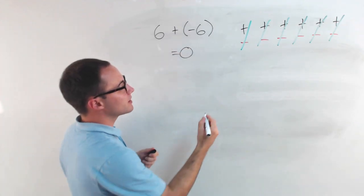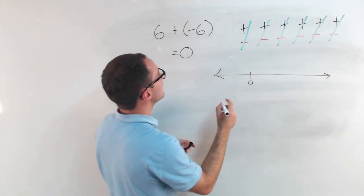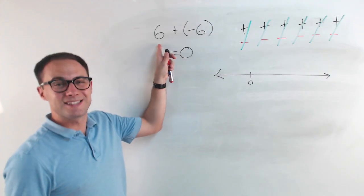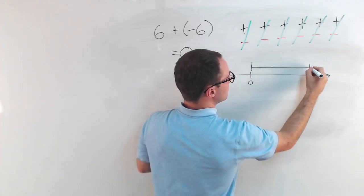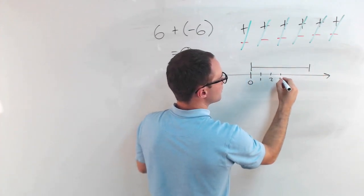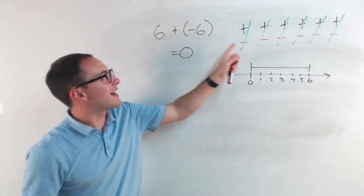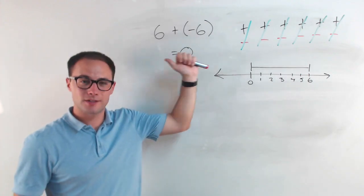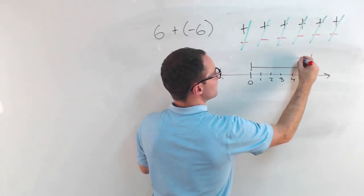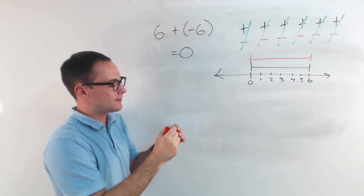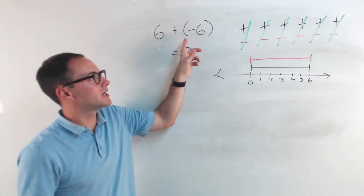Another way to think about it is with a number line. Start at zero, go up to six first. Then from there, add negative six — negative means going to the left. Going six to the left brings you right back to zero, which is again why six plus negative six equals zero.